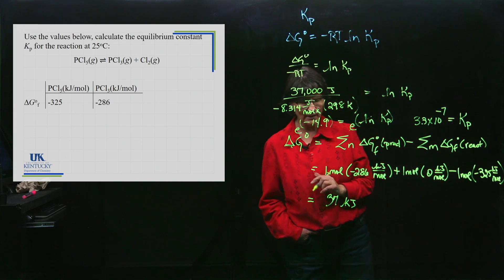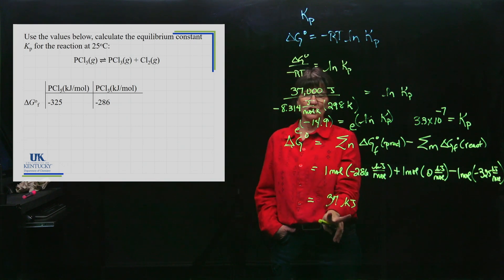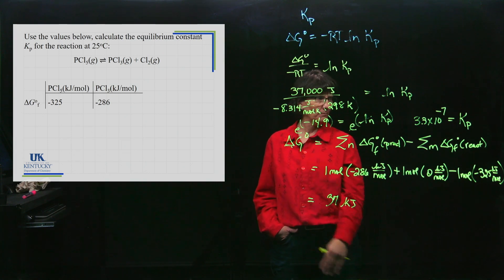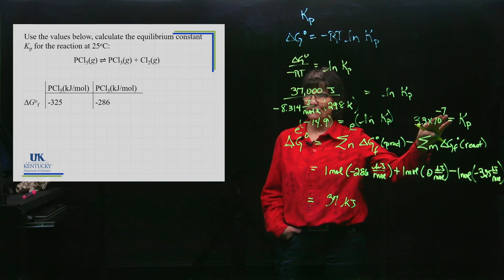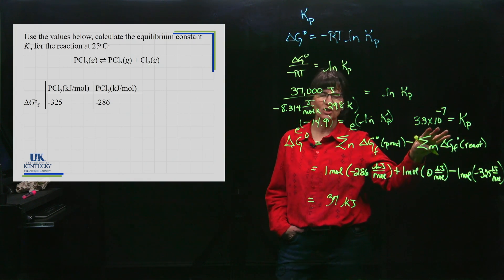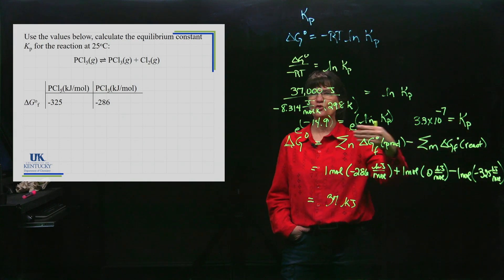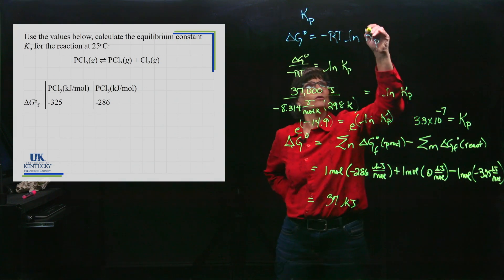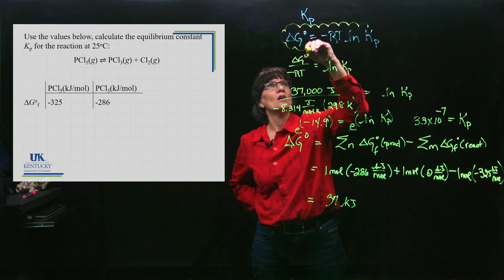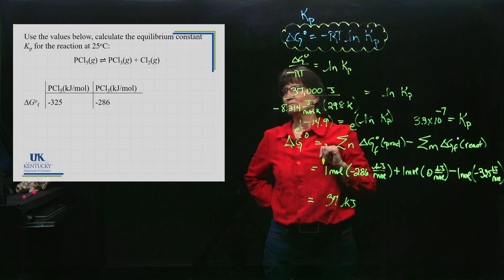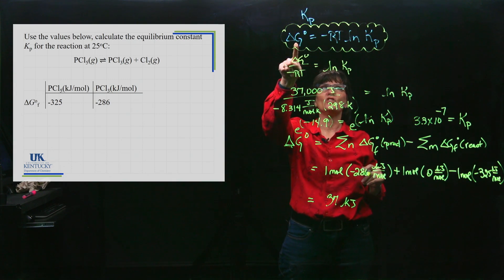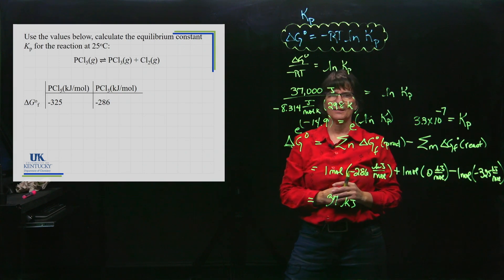Before we finish, let's check the connection. We have a positive standard delta G, meaning equilibrium shifts toward reactants. And we have a Kp of 3.3×10⁻⁷ — much less than 1 — which also tells us the equilibrium lies toward reactants. They are consistent. The real job of this equation is to help us convert between standard delta G and the equilibrium constant.